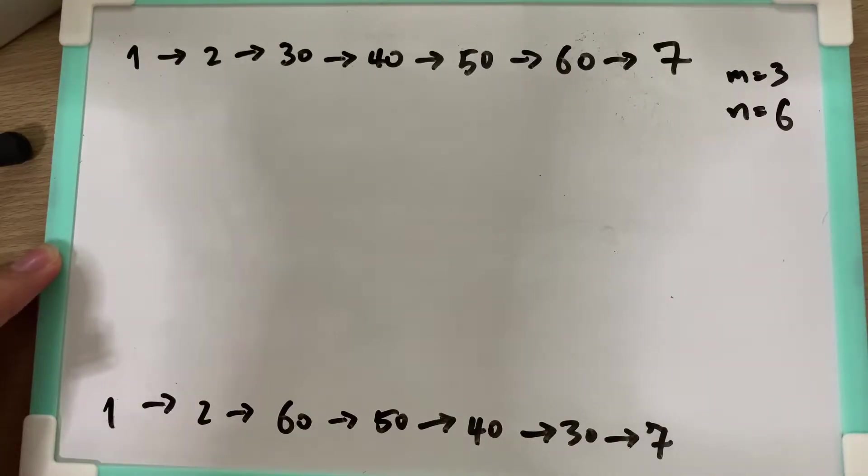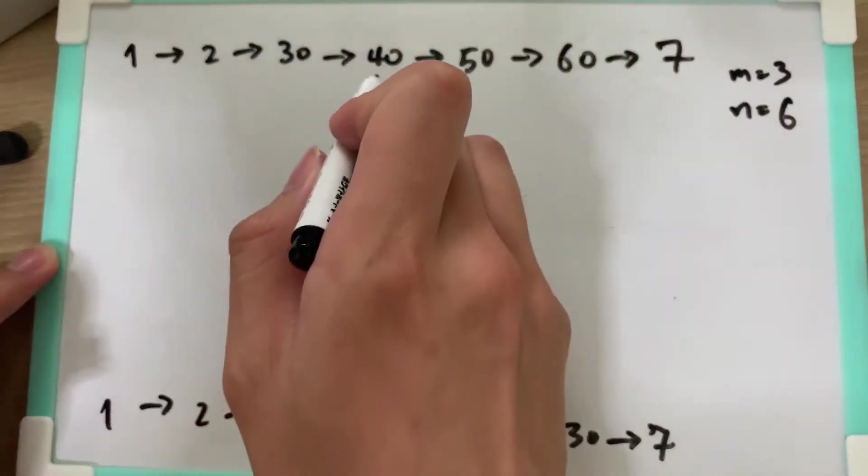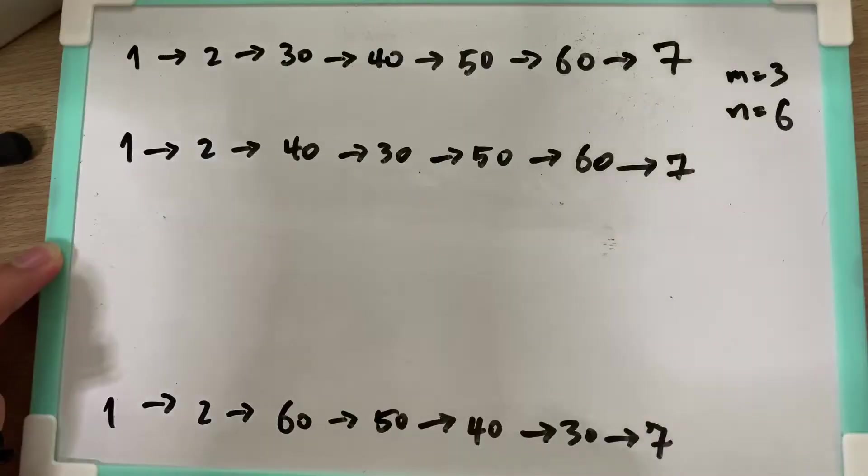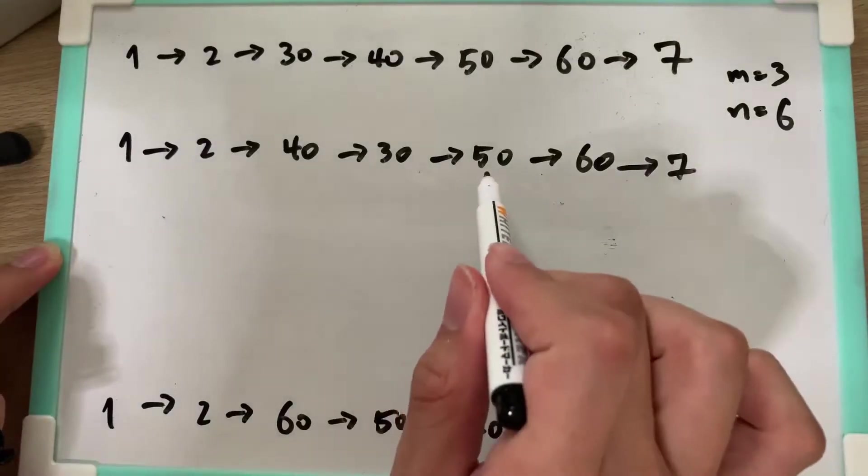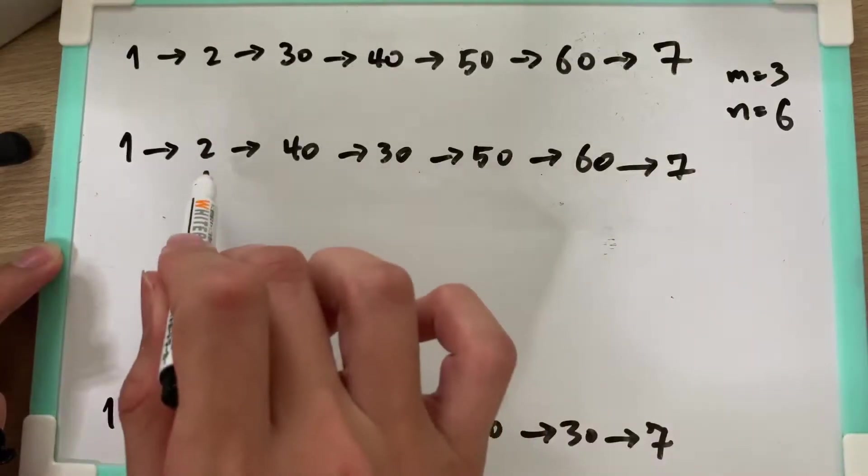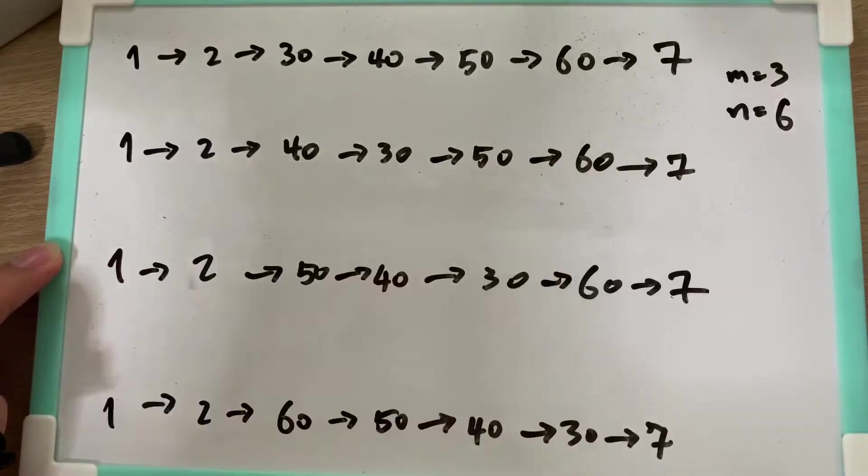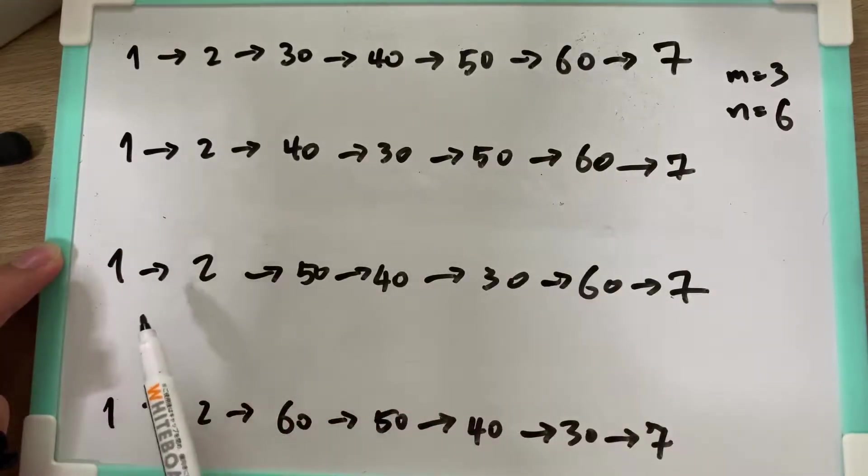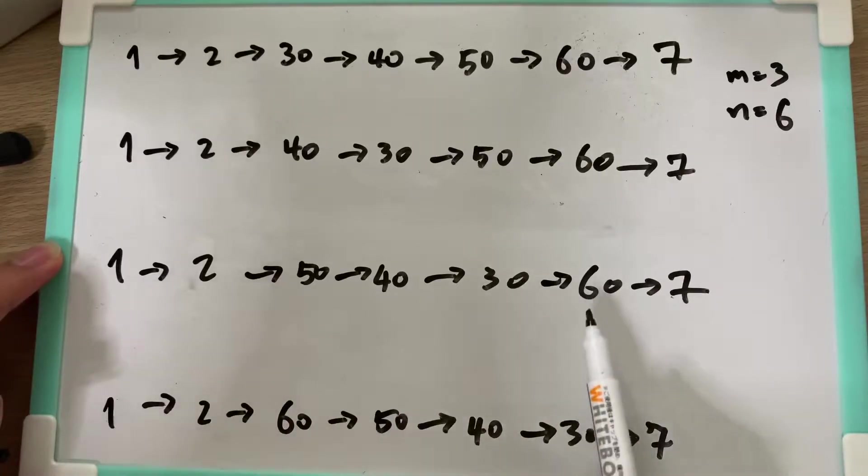We can reverse the node one by one. For example, we reverse 40 to 30, then we pluck out 50 and insert between 2 and 40. We pluck out 50 and insert into here, so it becomes this. Then, from here, we pluck out 60 and insert between 2 and 50 to become our final result.